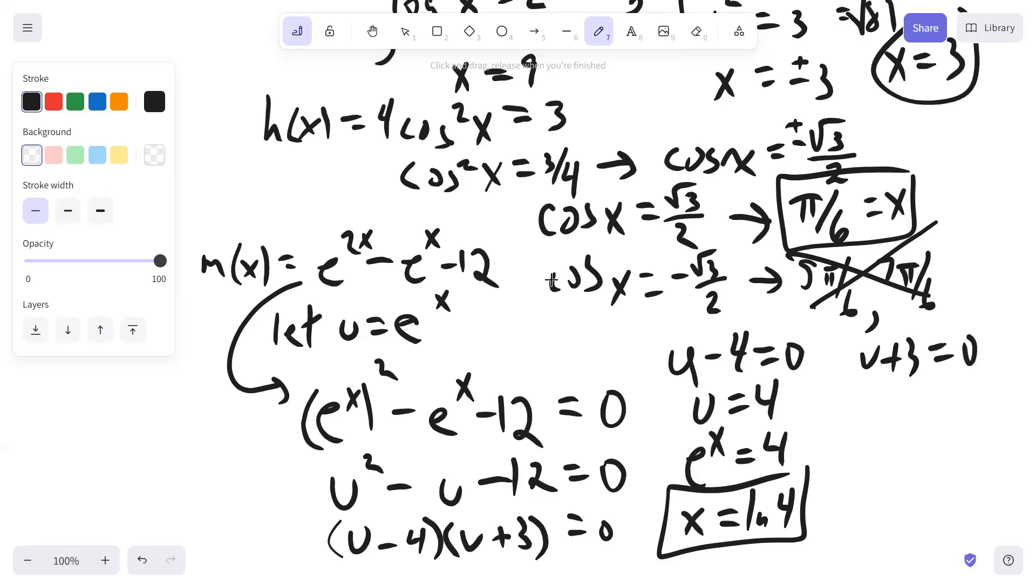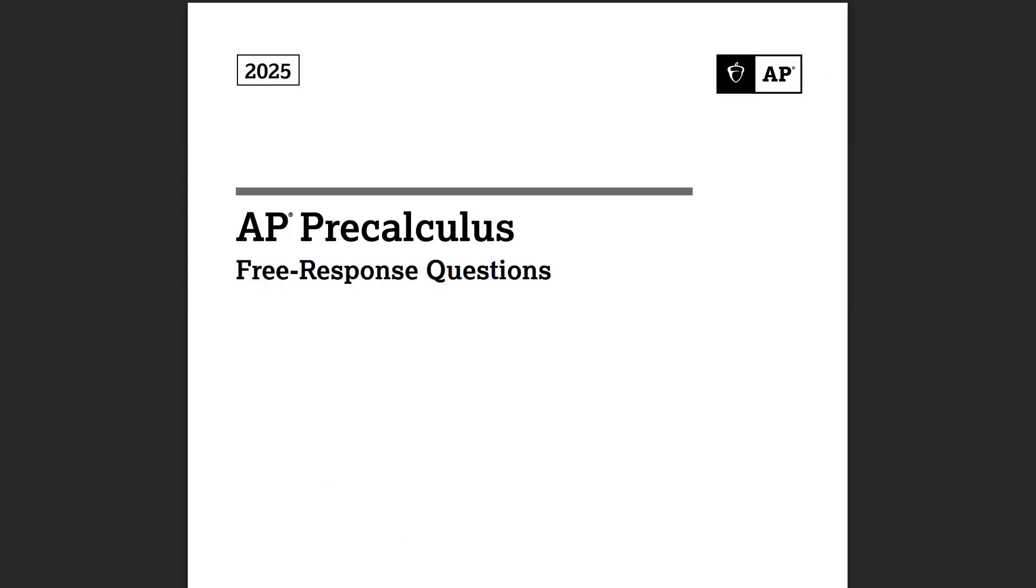Then we take the other factor. U plus 3 equals zero. U equals negative 3. E to the X equals negative 3. And if you take the natural log of both sides, there's no solution for that. So you have only X equals natural log 4. So that's a wrap for this free response question.